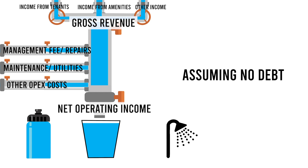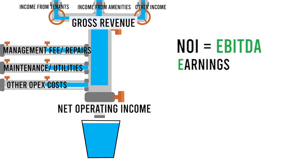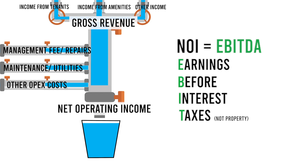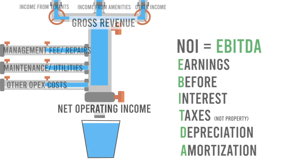Which leads me to another aside. In real estate, the NOI is also called EBITDA, which stands for Earnings Before Interest, Taxes — not property taxes — Depreciation, and Amortization. We'll get back to this, but not today. Let's move on to property values.